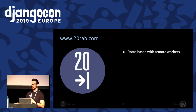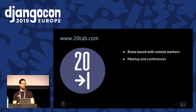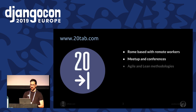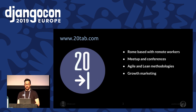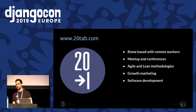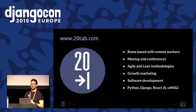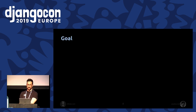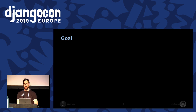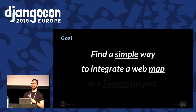20tab is a software company based in Rome with some remote workers. As a company, we attend and support some local meetups and conferences like this one. We use agile and lean methods. The main part of our work is software development with technologies like Python, Django, React, and Microservices. Some months ago, a customer asked us to add a dynamic map on their website because they wanted to show their data on the map. So I started studying the GeoDjango documentation again to find a simple way to integrate a web map in a Django project.